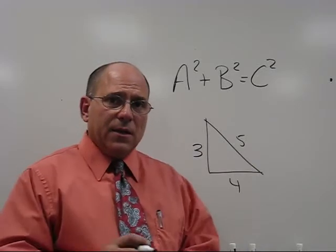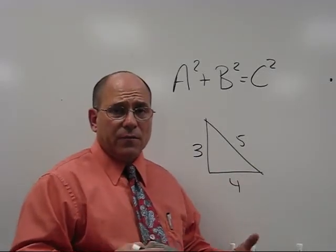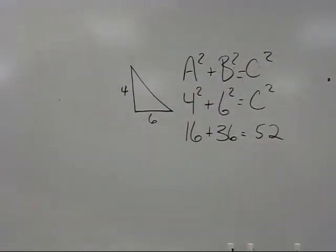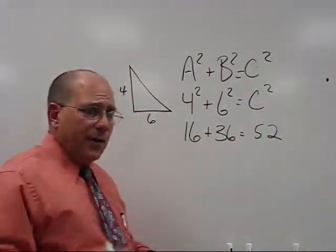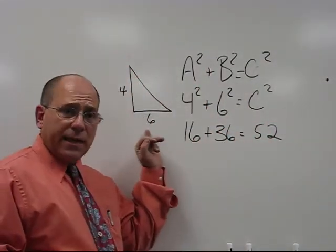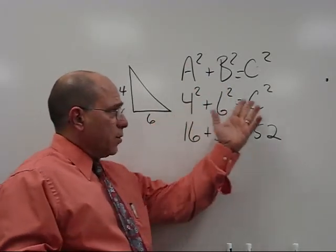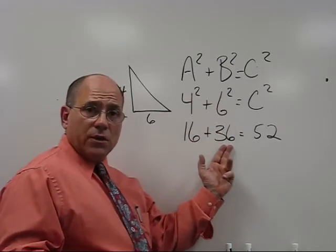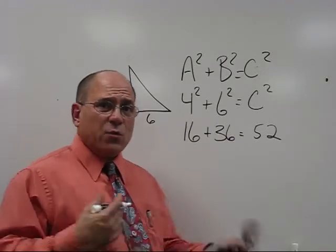Unfortunately, in some cases the numbers don't work out. You don't get a perfect square as an answer. Take, for instance, one like this where this leg is 4 and this leg is 6. We plug it all in: 4 squared plus 6 squared equals C squared. 16 plus 36 equals 52. The problem is there's no perfect square there.